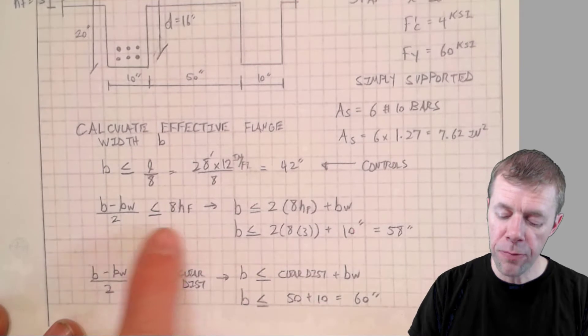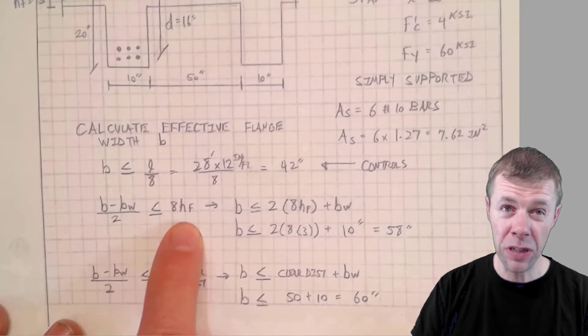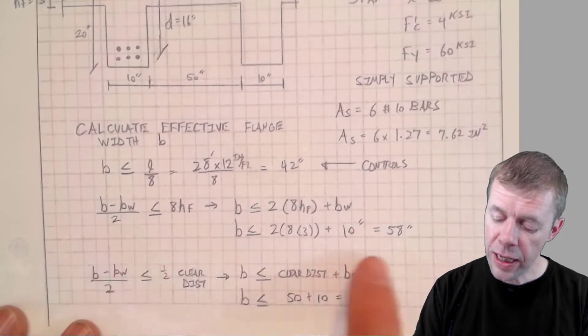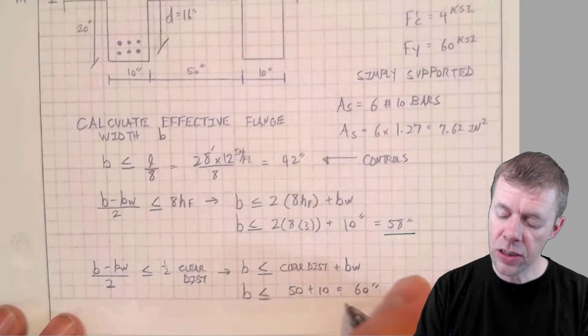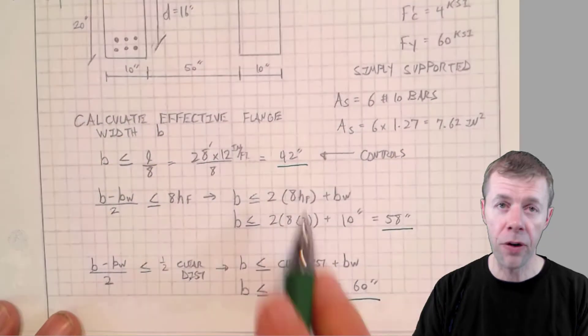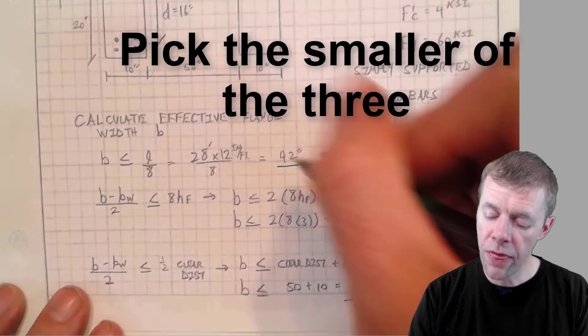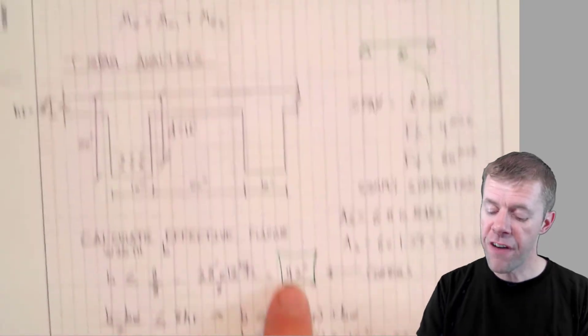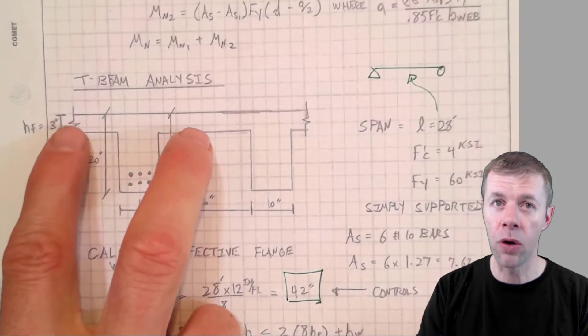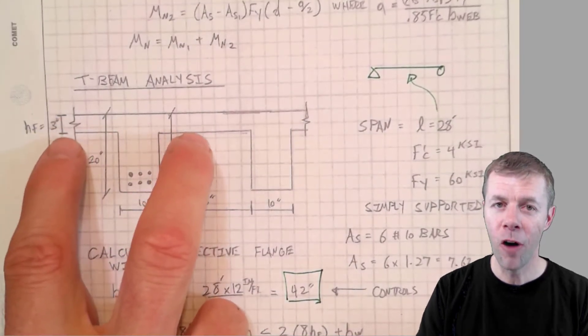One of them is BU minus BW over 2 has to be less than 8 times HF and that gives me 58 inches that controls. This is half my clear spacing which is 60 inches. I'm gonna compare these three together and I'm gonna pick the one that's the smallest, 42 inches. That is the effective width that I can count on at the top of my beam.